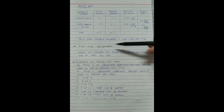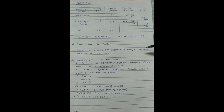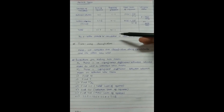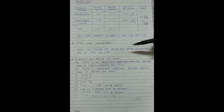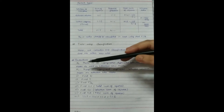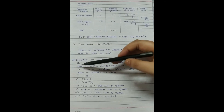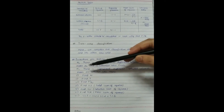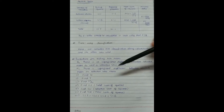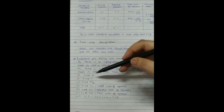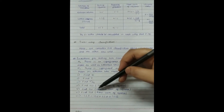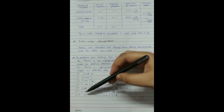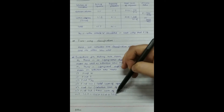Moving on to the two-way classification: here we consider one-way classification along the column and another along the row, so two directions are included — column-wise and row-wise. We test two types of means. The null hypothesis assumes no significant difference between column means and row means, while the alternative hypothesis states there is a significant difference. Just like in one-way classification we find n, T, T²/n, SST, and SSC, but here we additionally calculate SSR (the row sum of squares), and SST = SSC + SSR + SSE, where SSE is the error.